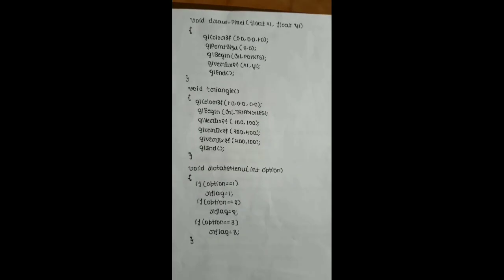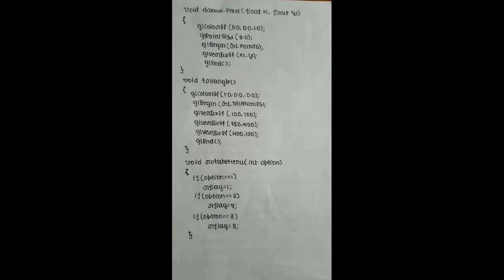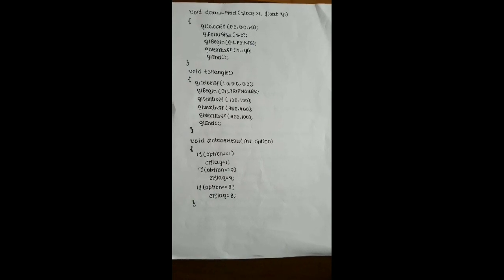Next is the dropPixel function. dropPixel is used to draw the point. glColor3f is used to give color to the point. Here, since only the blue color value is 1, the color of the point is blue. glPointSize is used to set the size of the point. glBegin is for the primitives and glPoint is used to draw the point. glVertex2f is used to set the x coordinate for the point.